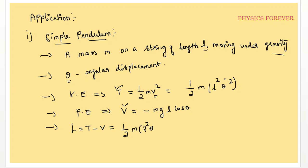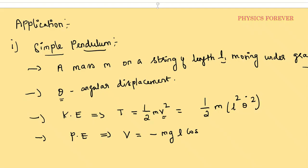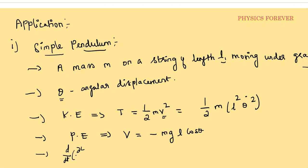So L equals one-half m l-squared theta-dot-squared plus m g l cos theta. After that we apply the equation of motion: d/dt of (partial L / partial theta-dot) minus partial L / partial theta equals zero.